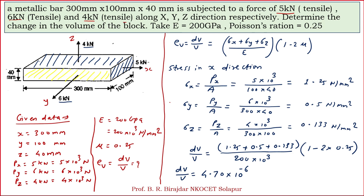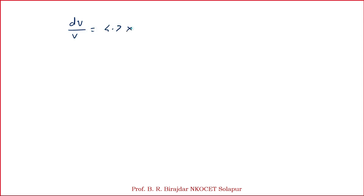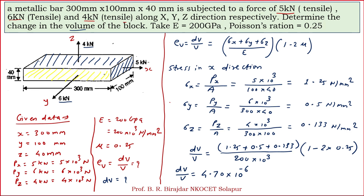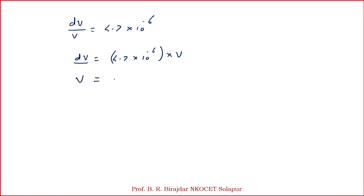Now, what we have to find out is the change in volume dv. We found volumetric strain = 4.70×10⁻⁶, so dv = 4.70×10⁻⁶ × V. The volume of the rectangular bar is 300×100×40. So volume V = 300×100×40 = 1,200,000 mm³. Therefore, change in volume dv = 4.70×10⁻⁶ × 1,200,000.